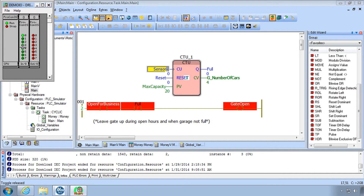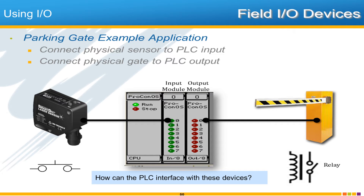We're able to click on these and turn them on. The idea is that it would be more realistic to assume there is a sensor wired to input 0 to sense the cars, and a relay wired to output 0 to lift and lower the gate. We have a sensor of some kind — which in reality is just the same as a switch — and a physical circuit is wired into an input module. The output module is wired to some type of relay which raises and lowers the gate. The question is how the PLC can interface with these devices, and what you as a programmer need to understand for them to work properly.